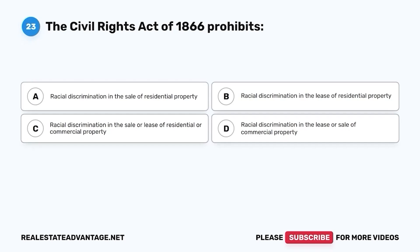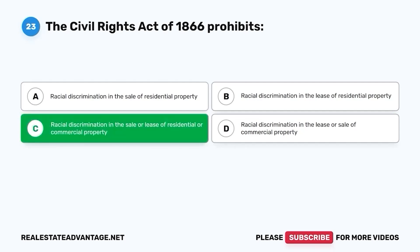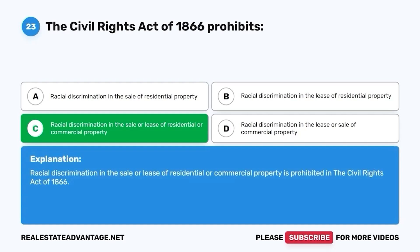Question 23. The Civil Rights Act of 1866 prohibits racial discrimination in the sale or lease of residential or commercial property. The correct answer is racial discrimination in the sale or lease of residential or commercial property. Racial discrimination in the sale or lease of residential or commercial property is prohibited under the Civil Rights Act of 1866.